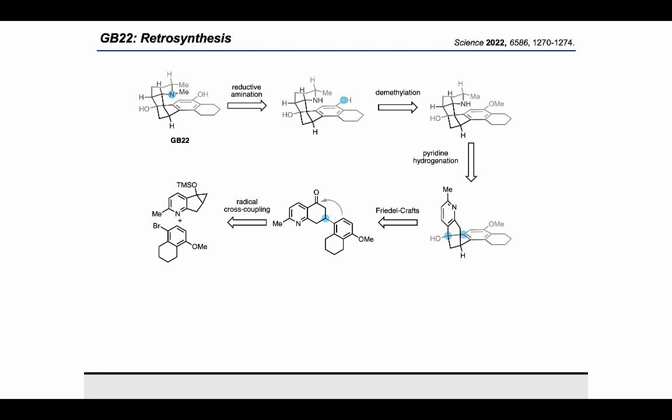Taking a look at the retrosynthesis for GB-22, we first install a methyl via reductive amination, which is preceded by demethylation to reveal the anisole. The piperidine could arise from pyridine hydrogenation, which would take us retrosynthetically back to the pyridine. This hydrogenation should be entirely diastereoselective due to the fact that all the hydrogens would prefer delivery from the convex face of the molecule. This pyridine could be accessed through a Friedel-Crafts reaction—nucleophilic attack by the electron-rich aryl ring into the ketone. This brings us back to a beta-substituted ketone, which would be accessed via radical cross coupling.